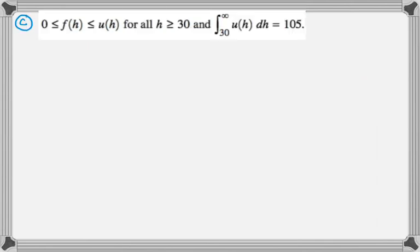The next part's pretty weird. We're told that we have another function U of H, and we know that zero is less than or equal to F of H is less than or equal to U of H for all H greater than 30. And we also know the integral from 30 to infinity of U of H dH is 105.